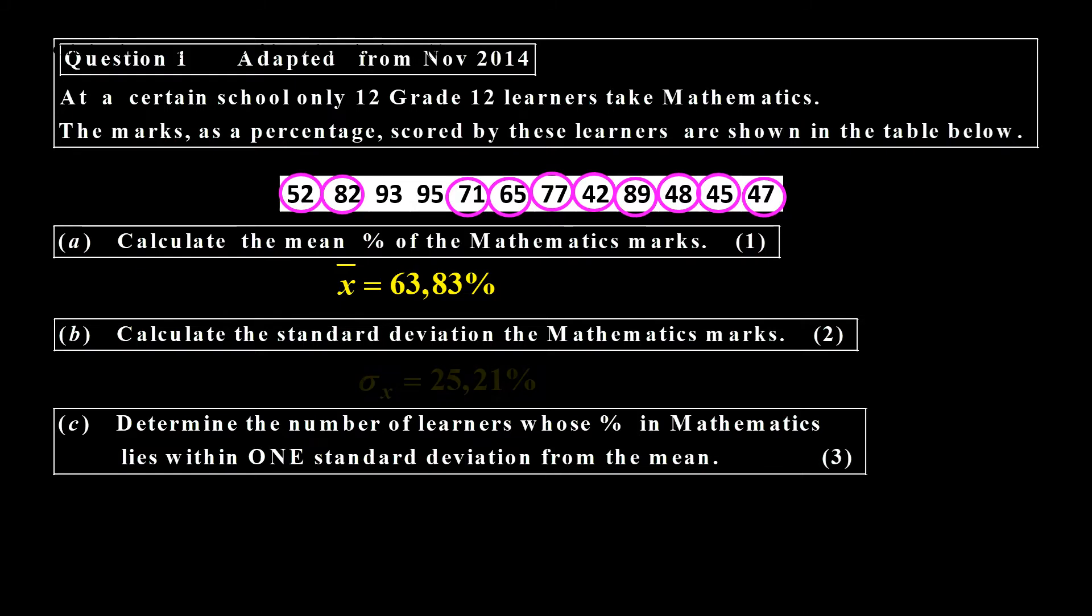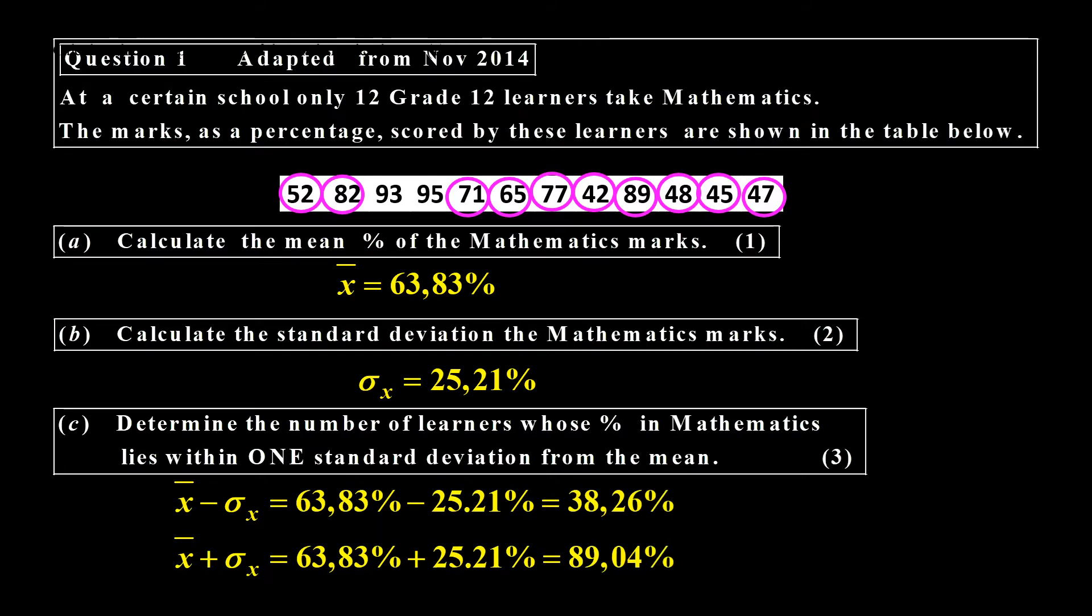The mean is 63.83%. The standard deviation is 25.21. And there we have the one standard deviation from the mean. So one below the mean and one above the mean.